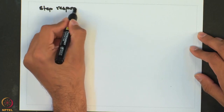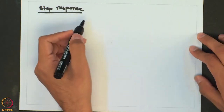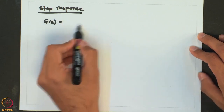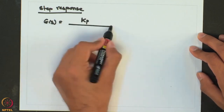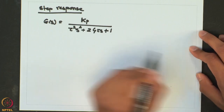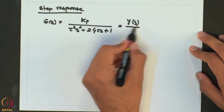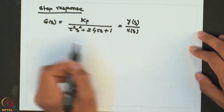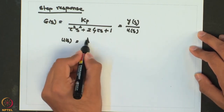Hello students, welcome back. We are looking at the response of a second order system to a step input, and based on that we will be getting the classification of second order systems. The transfer function for the second order system in a generic form is KP over tau squared S squared plus twice zeta tau S plus 1, which equals Y(S) over U(S), and for a step response U(S) equals A over S.